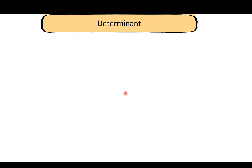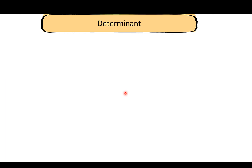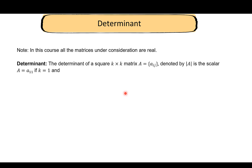Welcome back. In this video we'll take a look at a few basic concepts related to matrix algebra. We'll start by looking at the determinant of a matrix. All of the matrices involved in this course are real — we do not deal with complex numbers. The determinant of a square k by k matrix A, with elements a_ij, is denoted by |A|.